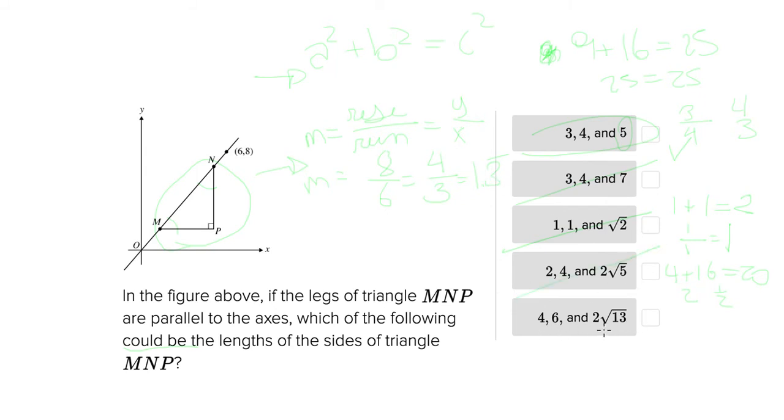And then for this last one we've got 4 times 13, 2 times 13 is 26, 26 times 2, yeah that's 52. So then we've got 16 plus 36, does that equal, yes that equals 52, so this satisfies the Pythagorean theorem. But then the slope wouldn't work out because you have 4 over 6 or 6 over 4 instead of 4 over 3.